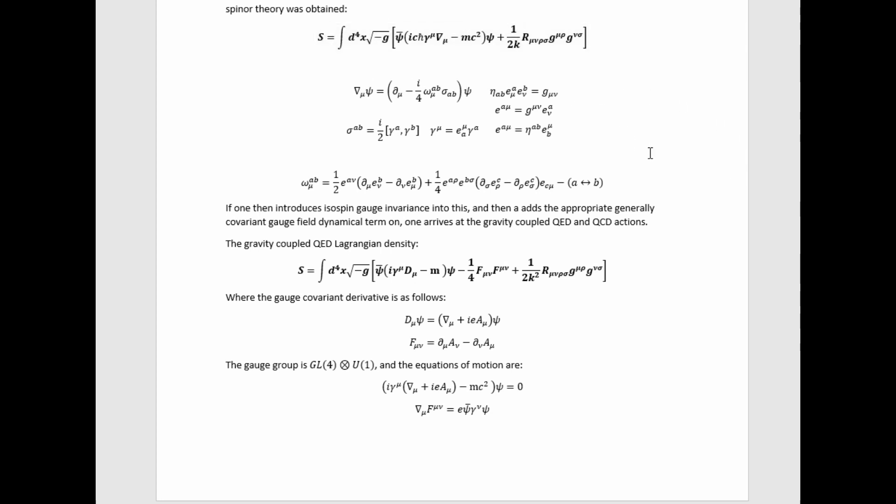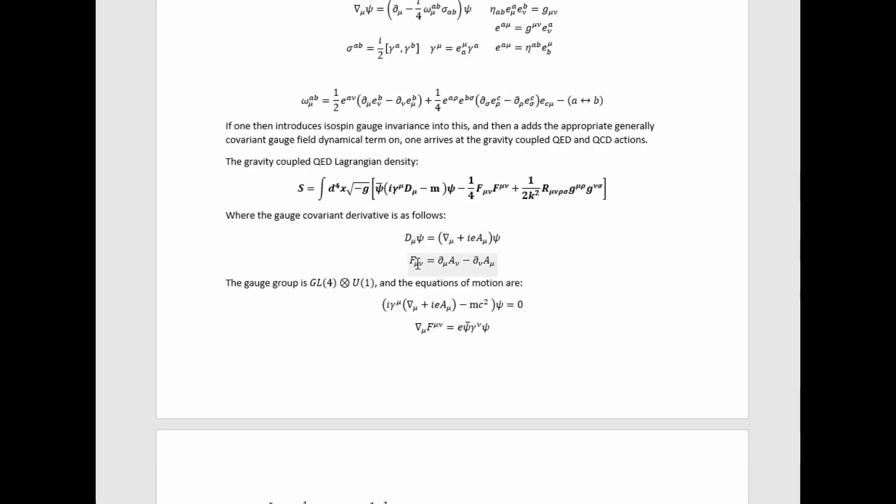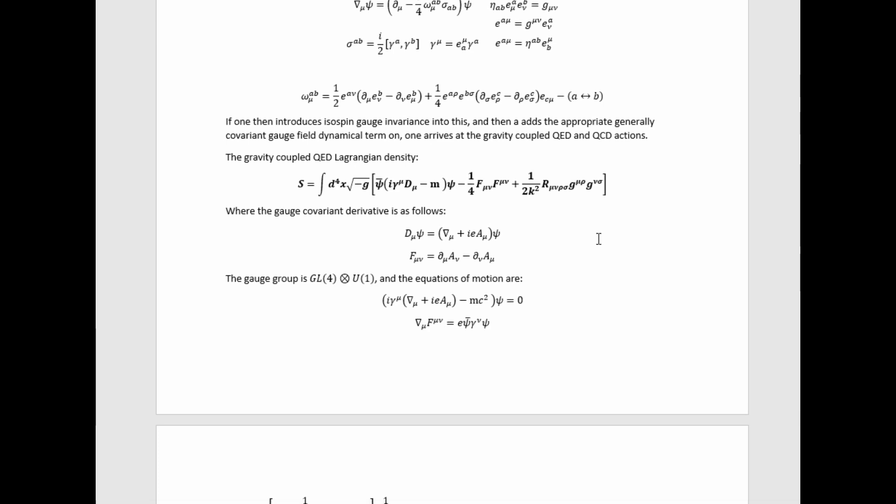So if we introduce U1 gauge invariance into this theory that we've already built, and add in the appropriate Maxwell-type dynamical term for that gauge field, then we get gravity coupled quantum electrodynamics, where this is the formula for the Faraday tensor, and this is the covariant derivative for U1 gauge invariance.